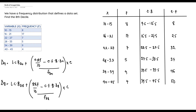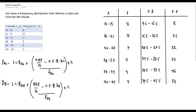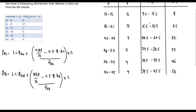Now that we have all the details, it's time to slot them into the formula. First, we need to locate the 8th decile position: 8 × Σf / 10 = 8 × 50 / 10 = 40. So the 8th decile is located at the 40th position of the data set.